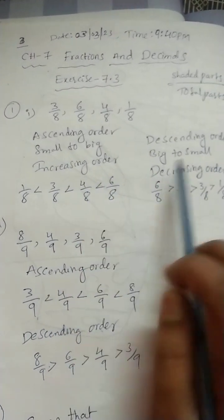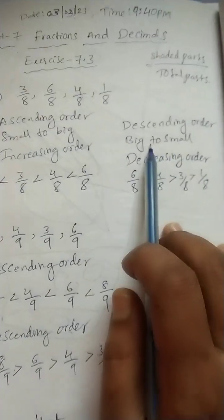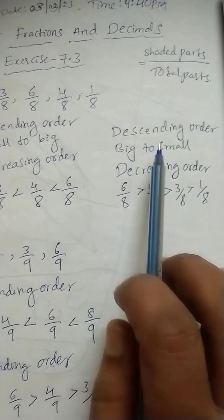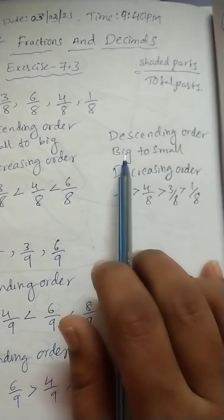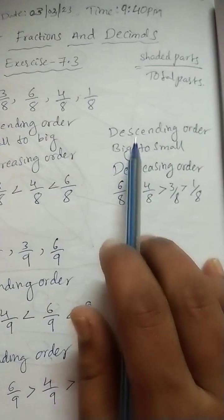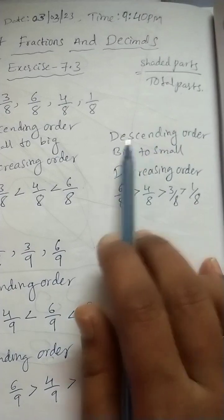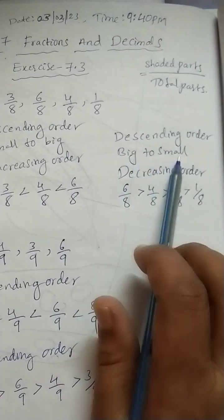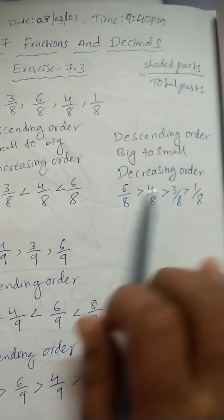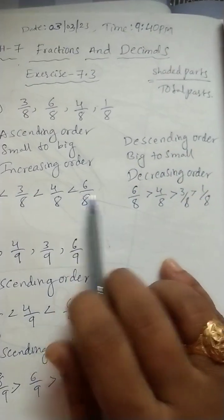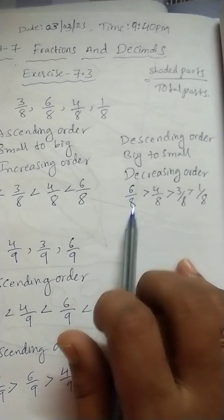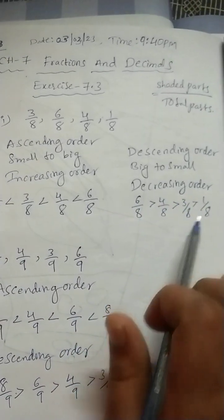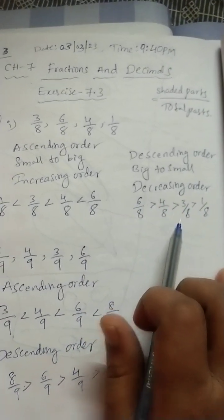Now, same way, we should write descending order also. We have 3 names: descending order, big to small, decreasing order. Just reverse of ascending order: 6 by 8, 4 by 8, 3 by 8, 1 by 8.